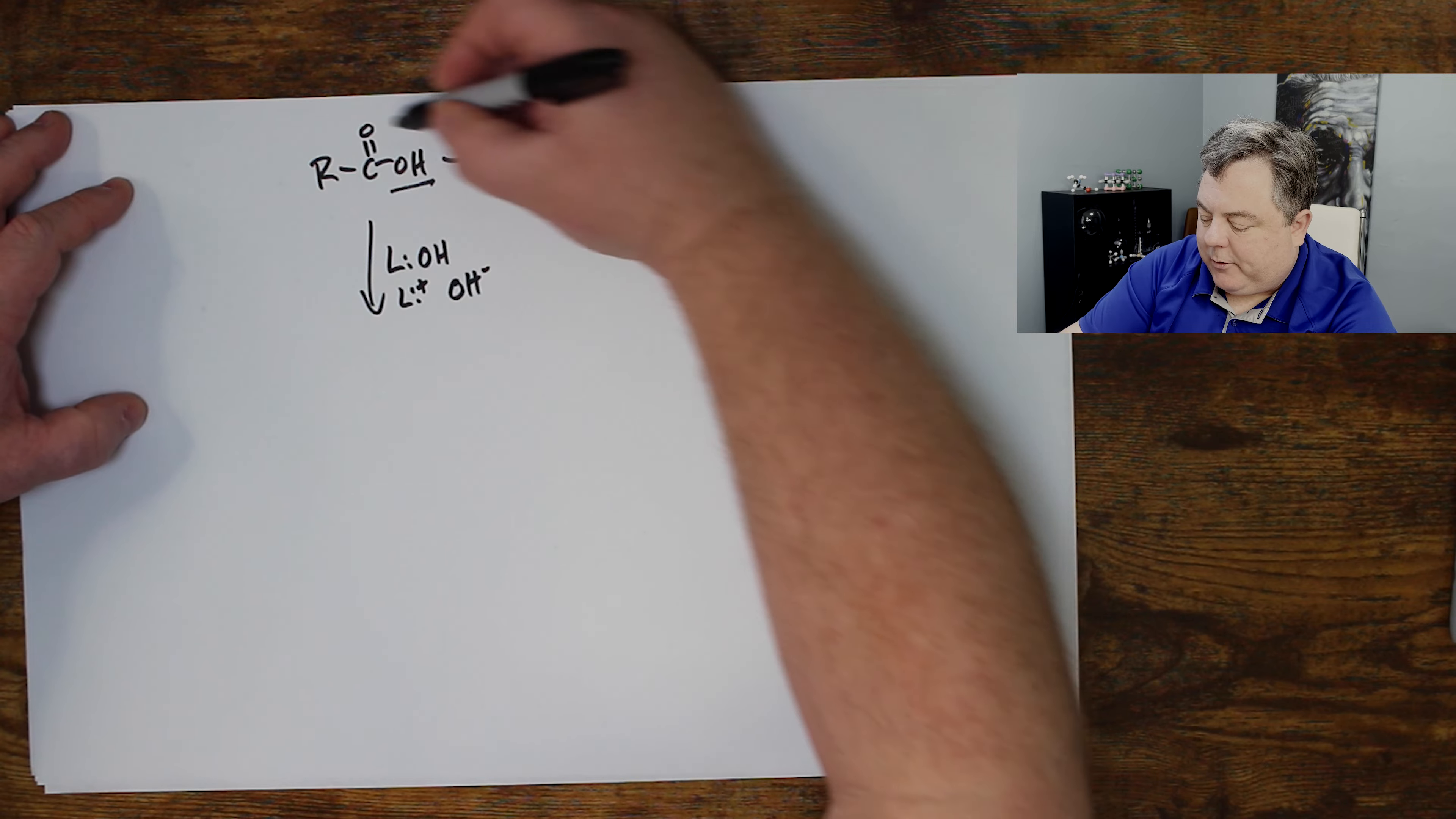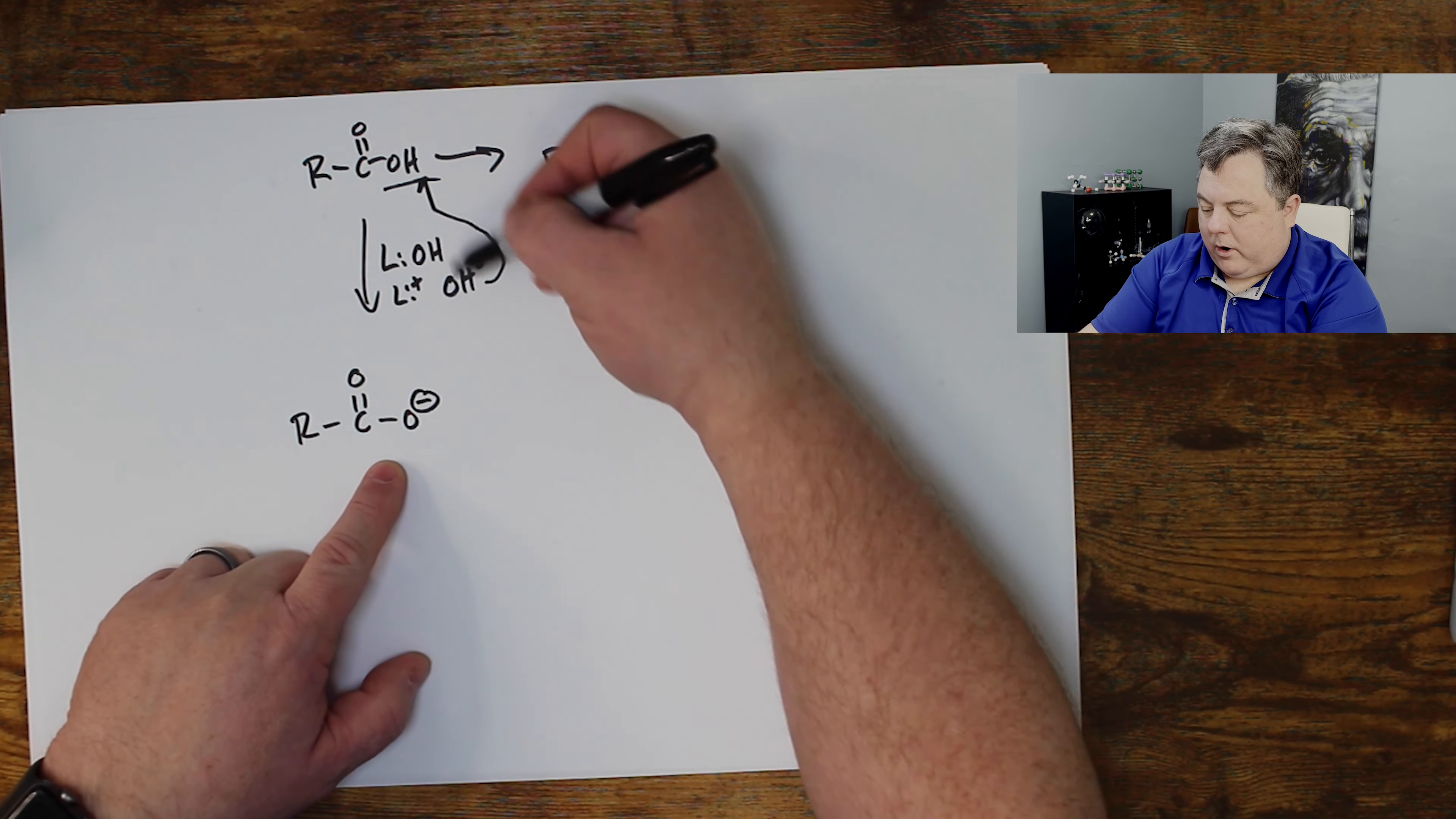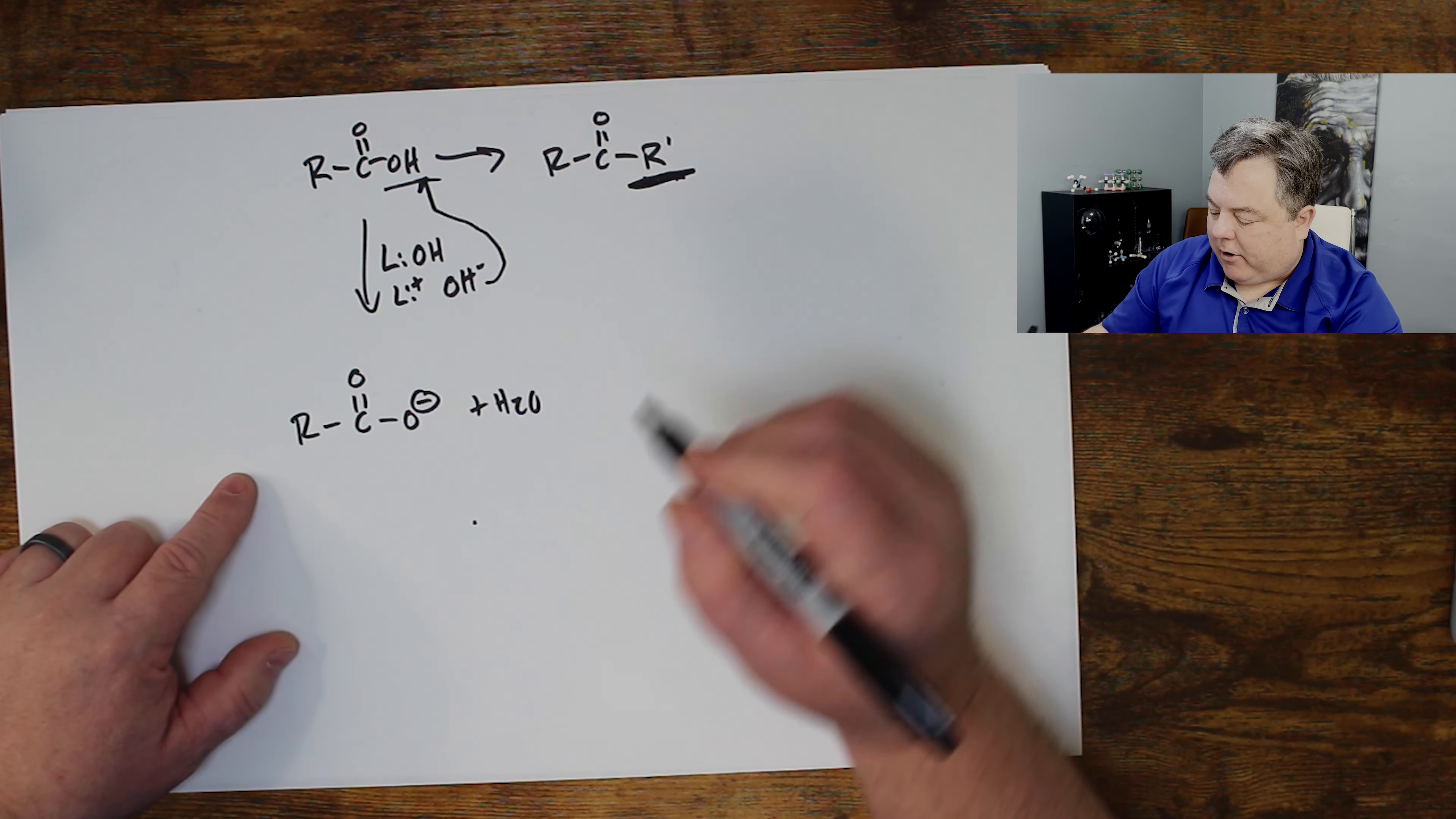The first step is you use a base, lithium plus and hydroxide minus. So where's the most positive spot on this carboxylic acid? It's this H plus. I'm going to pull that H plus off. So if I pull off that proton, I have water as my byproduct. This hydroxide picked up that H plus, but I made a carboxylate.